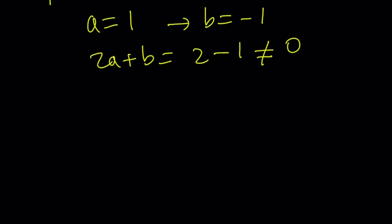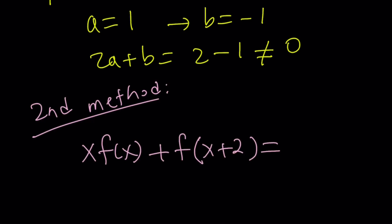Anyways, let's go ahead and proceed with the second method. Now, if you can think of a third method for this problem, please let me know, because I'm curious. But anyways, let's proceed with the second method. For my second method, let me rewrite the original problem. So x times f of x plus f of x plus 2 equals x squared. Great.